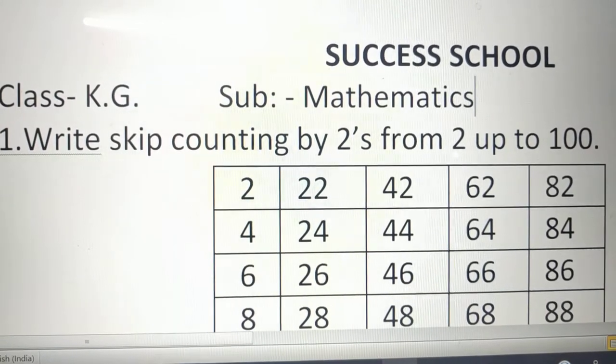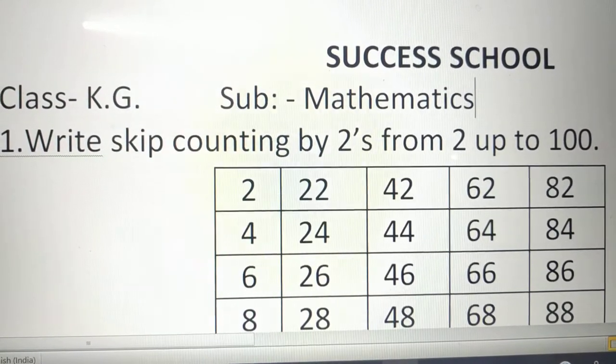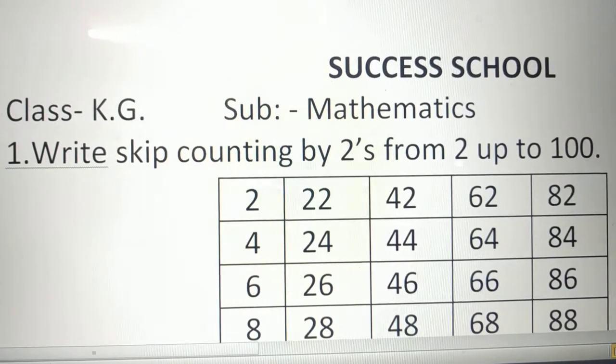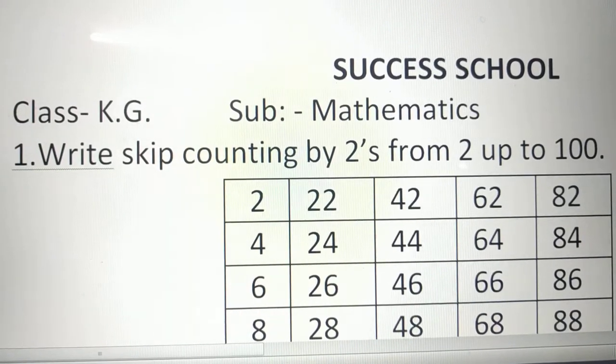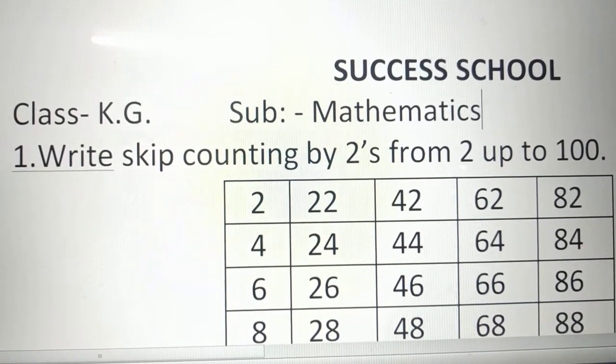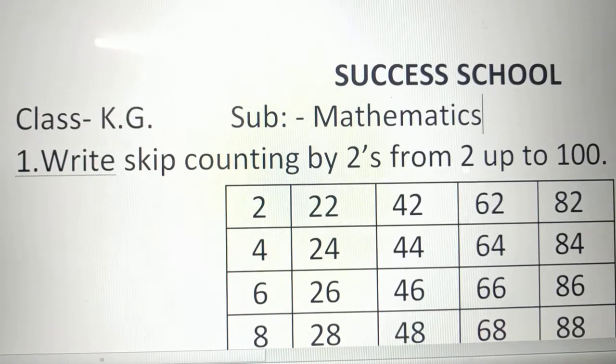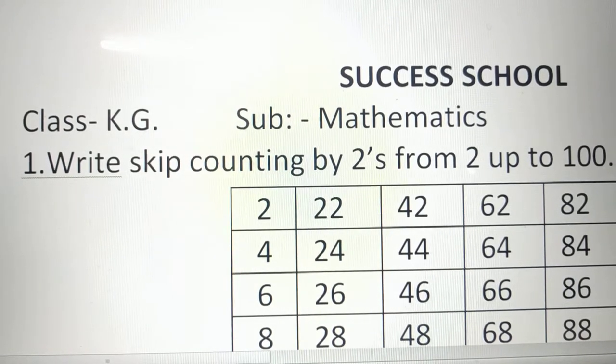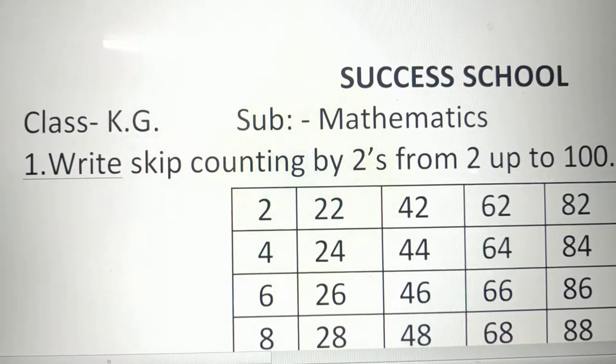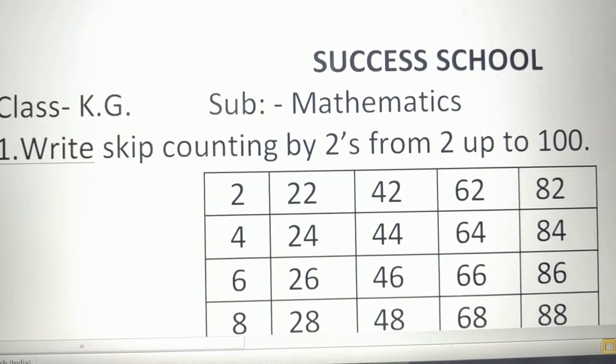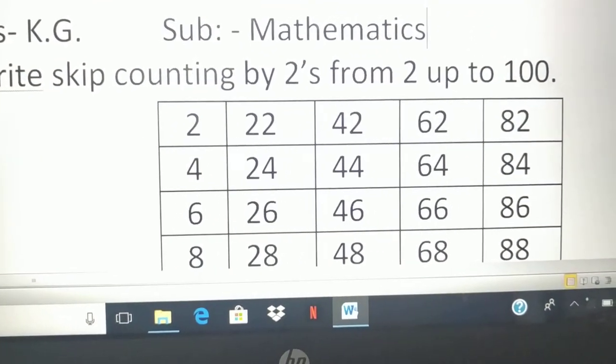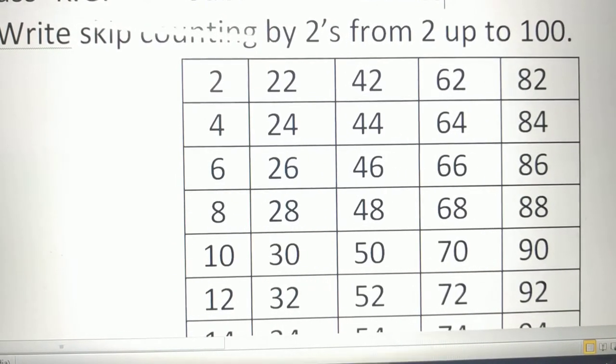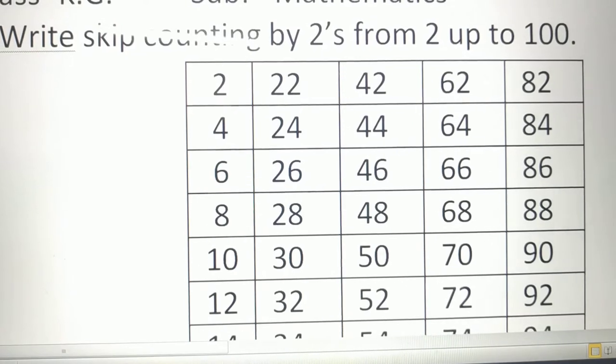Today that's 17 April 2020 and this is for KG class, subject math. Question number 1, write skip counting by 2 from 2 up to 100. Then 2, 4, 6, 8, 10, 12.